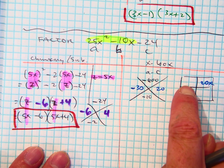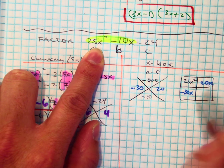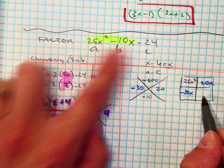What am I going to put in there? 25x squared. What am I going to put in here? Negative 24.